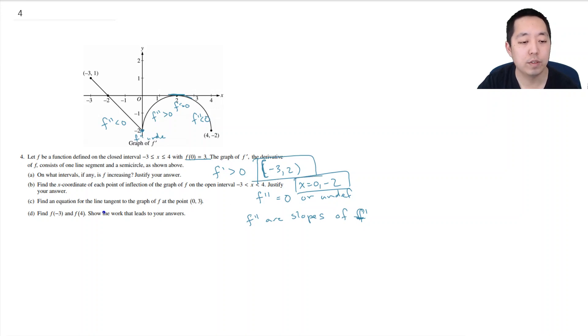Find an equation for the line tangent to the graph of f at 0, 3. So in general when you want to do any tangent line I always write this: y minus y naught equals m times x minus x naught. This is point slope form. Now in this case I already know my point that I'm at. I just need to know what m is.